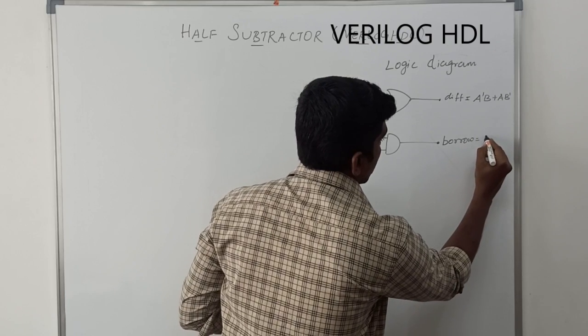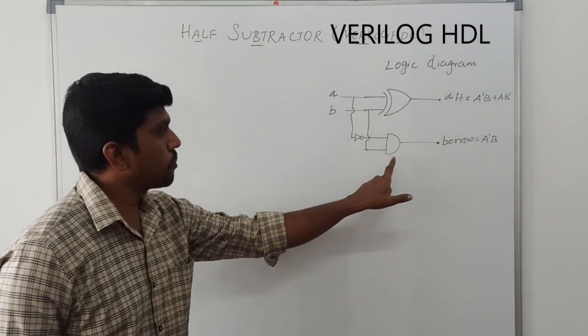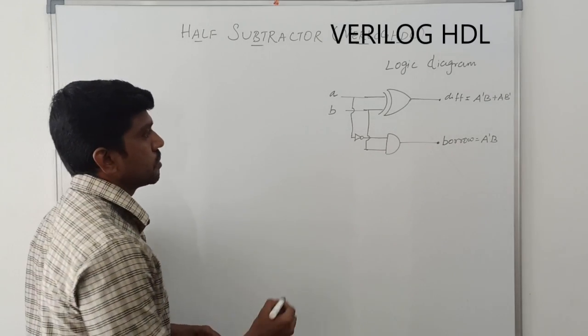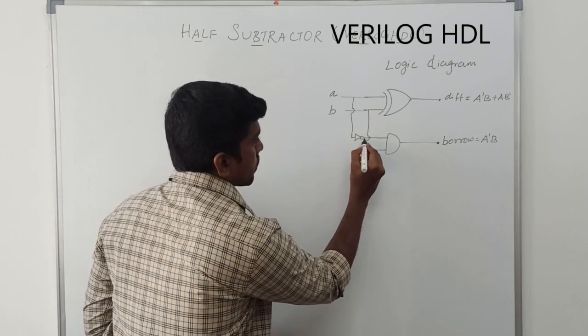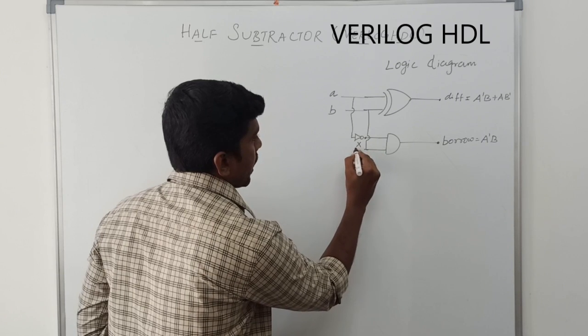The equation, A bar B. This is the equation for AND operation.